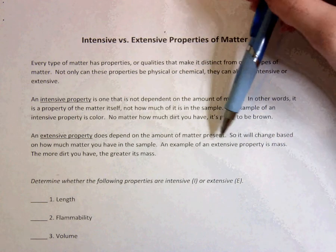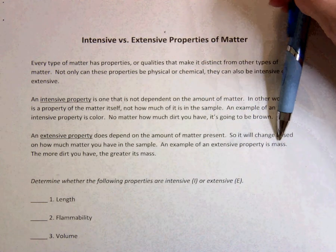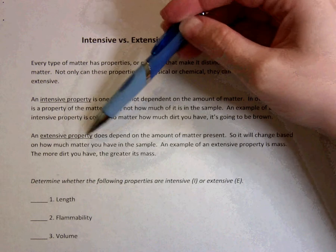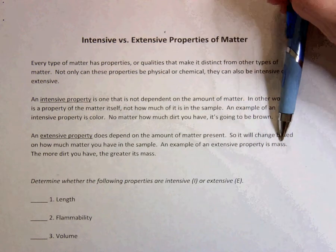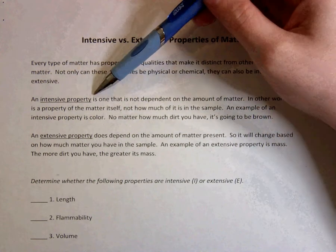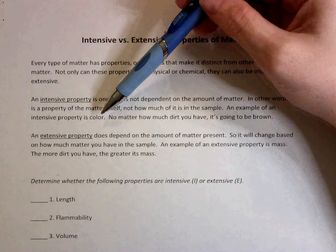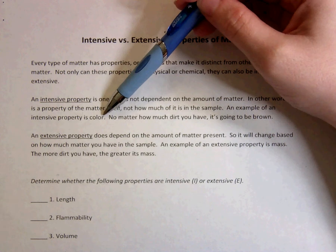So an example of an extensive property is mass. The more you have of a substance, its mass will change. An intensive property could be color. Color doesn't change just because you have more of something.